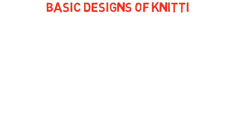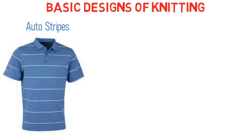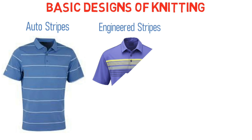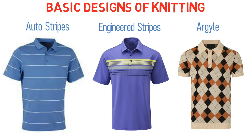Now we will see some basic designs used in knitting t-shirts. The first is auto stripes — stripes at equal distance from each other. Next are engineer stripes, where stripes are at a particular place only; in this t-shirt, stripes are at the chest. The diamond-shaped knitted pattern is called argyle.